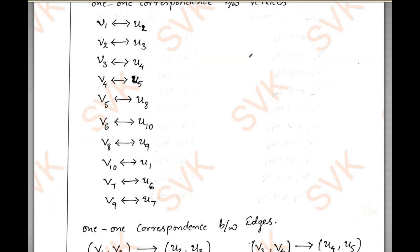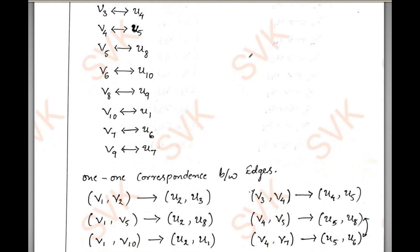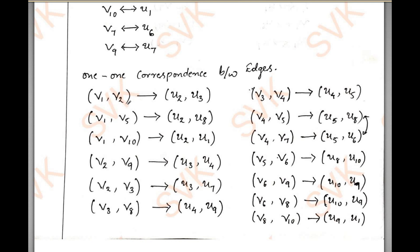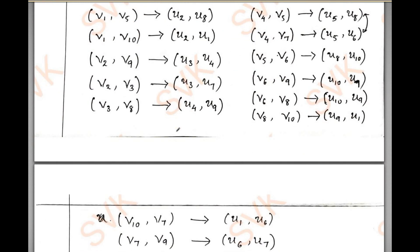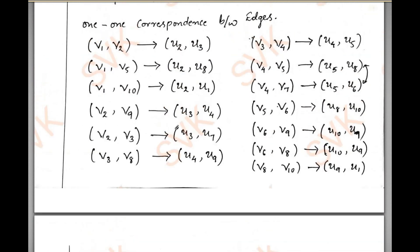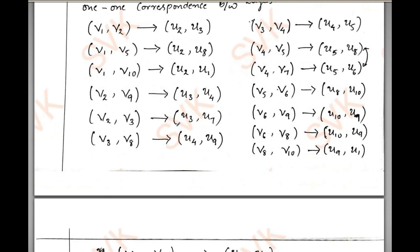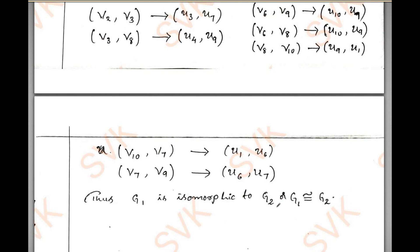Then we shall show the one-to-one correspondence of edges. V1 is incident with V2 — edge E1 — and its correspondence E1' is U2, U3. Similarly, all edge correspondences have been listed. I will show now how vertices also correspond using the graph. V1 corresponds to U2, V2 to U3, V3 to U4, V4 to U5. Then we show that adjacency has been preserved. Therefore, G1 is isomorphic to G2.